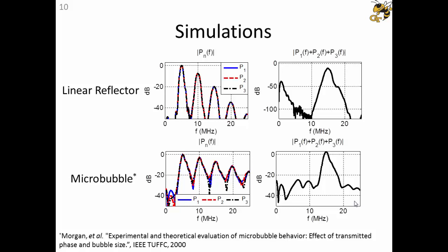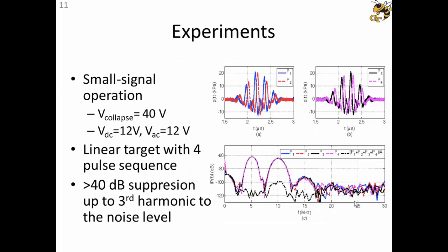We ran some initial experiments to demonstrate the idea with a real CMUT. I picked up a random CMUT in the lab, there's nothing special about it. First we checked the small signal operation for the linear reflector to see if the device is fine, because in this case we have an analytical solution. We are driving in a very small signal regime where we can see the third harmonic is very lower than the first two. This is a four-pulse sequence, and we see that more than 40 dB suppression up to the third harmonic is expected.